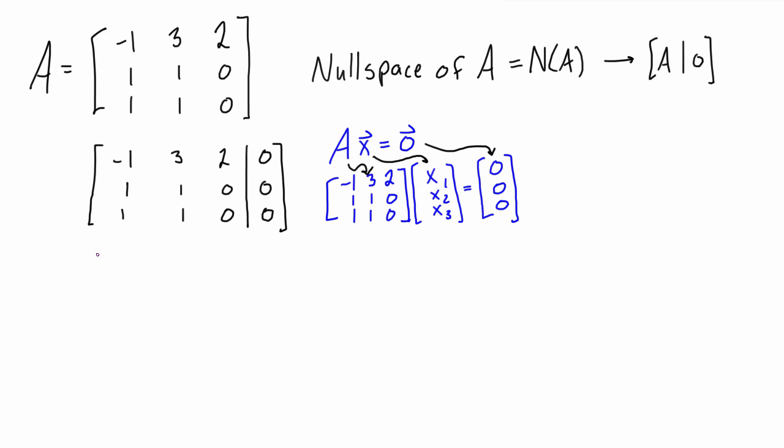So the first thing we want to do is apply our elementary row operations. I think what we want to do is row three minus row two. Let's first write in row one, we're not going to be changing row one, so we have one, three, two, and a zero.